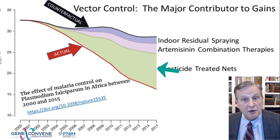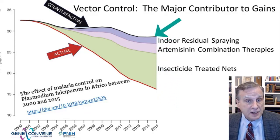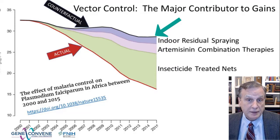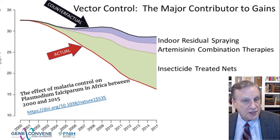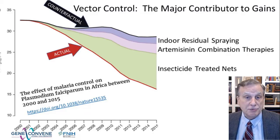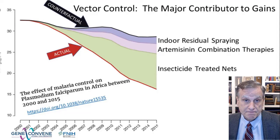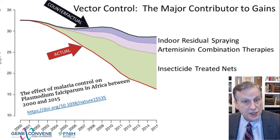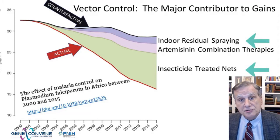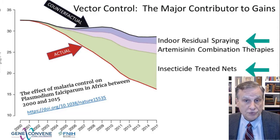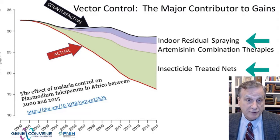The black line is the counterfactual — the estimated parasite prevalence there would have been if these interventions were not applied. The colored zones are the estimated contributions to prevalence reductions of each of these interventions. The two classes of interventions targeting the mosquito have had the largest impact and contributed the most to reducing malaria prevalence among children in Africa.